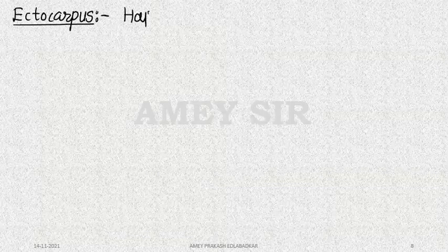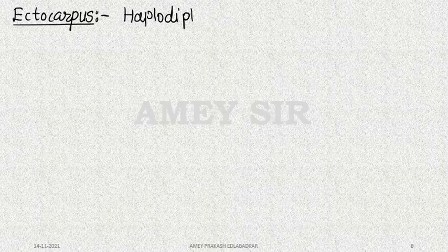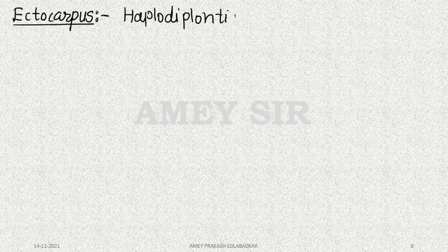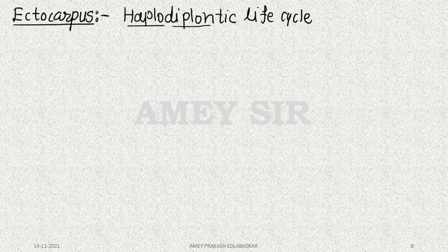When we discuss the life cycle, I had mentioned that we will explain using Ectocarpus — this has been asked many times. Sargassum is called Gulf Weed. Ectocarpus exhibits a haplodiplontic type of life cycle. Usually algae show haplodiplontic life cycles. Here, both the haploid phase and the diploid phase are dominant.